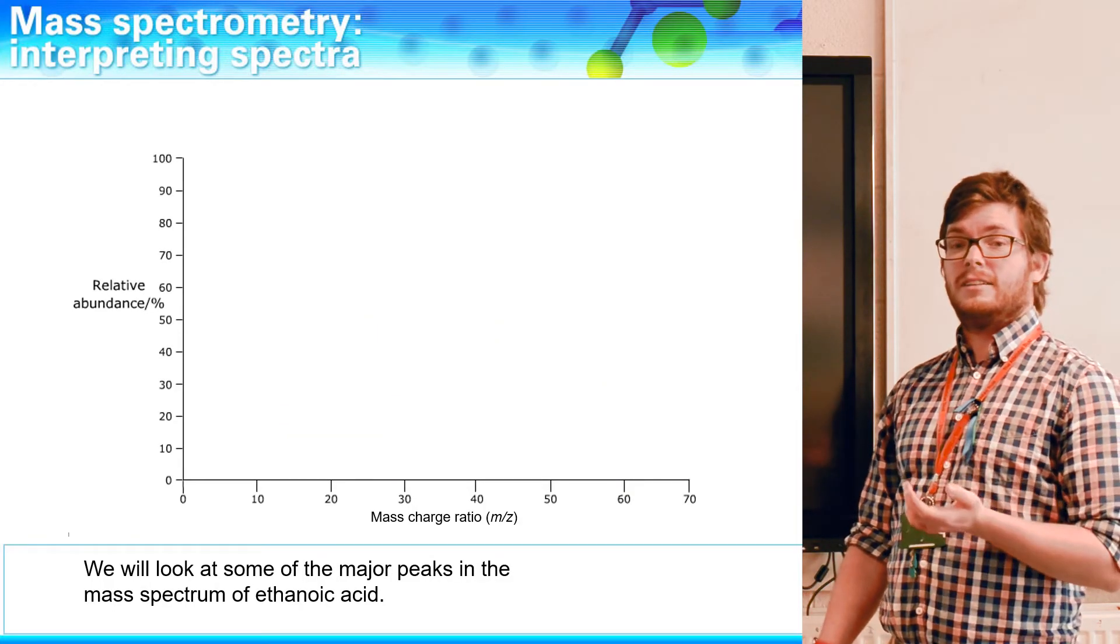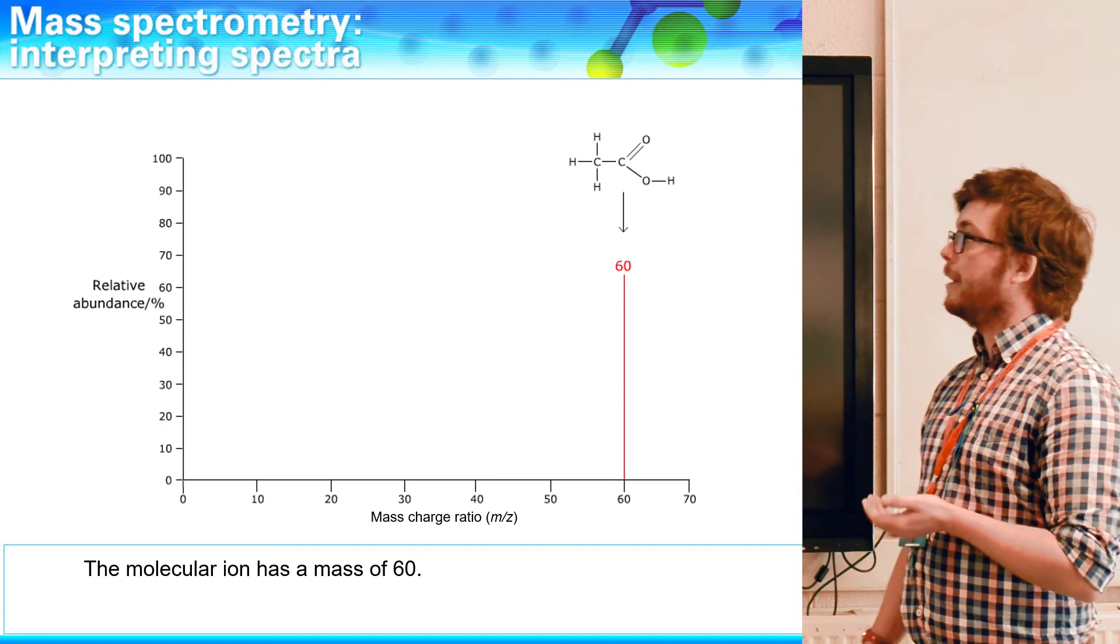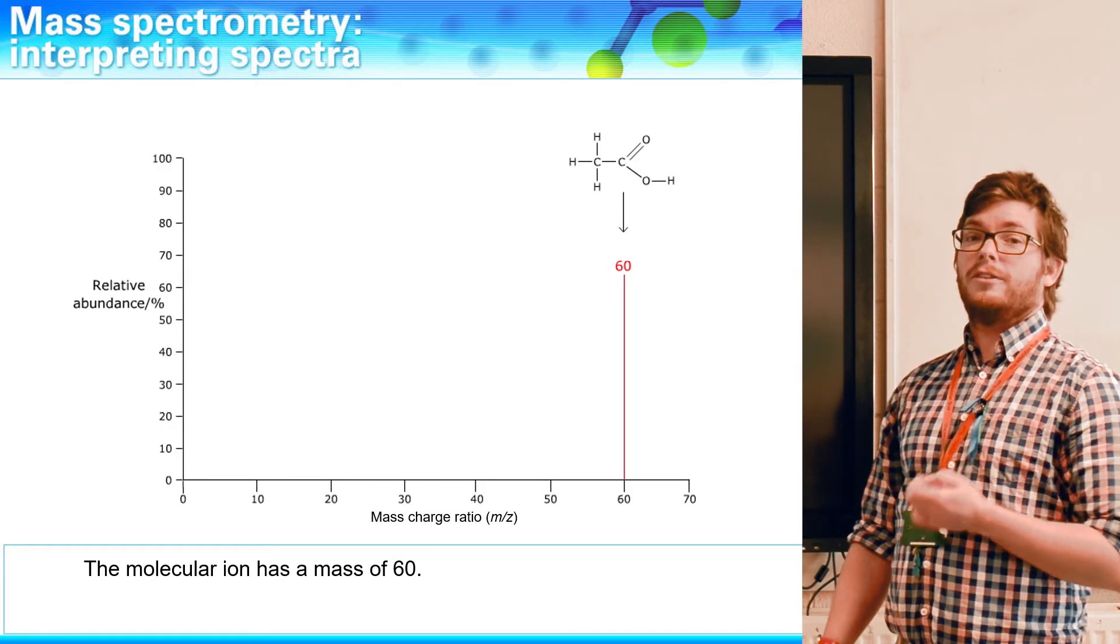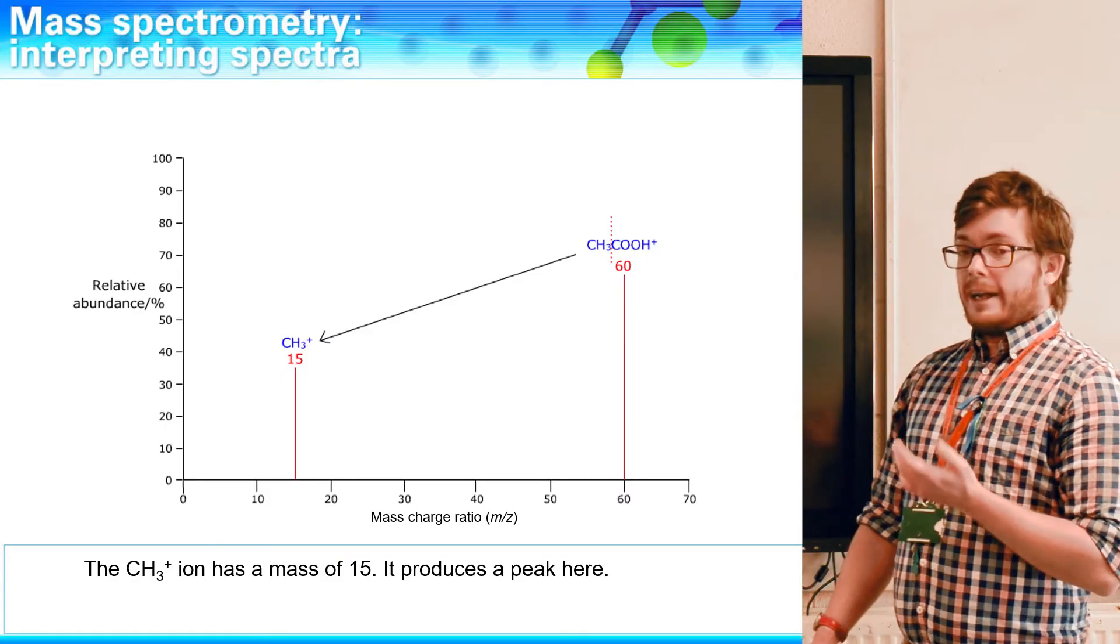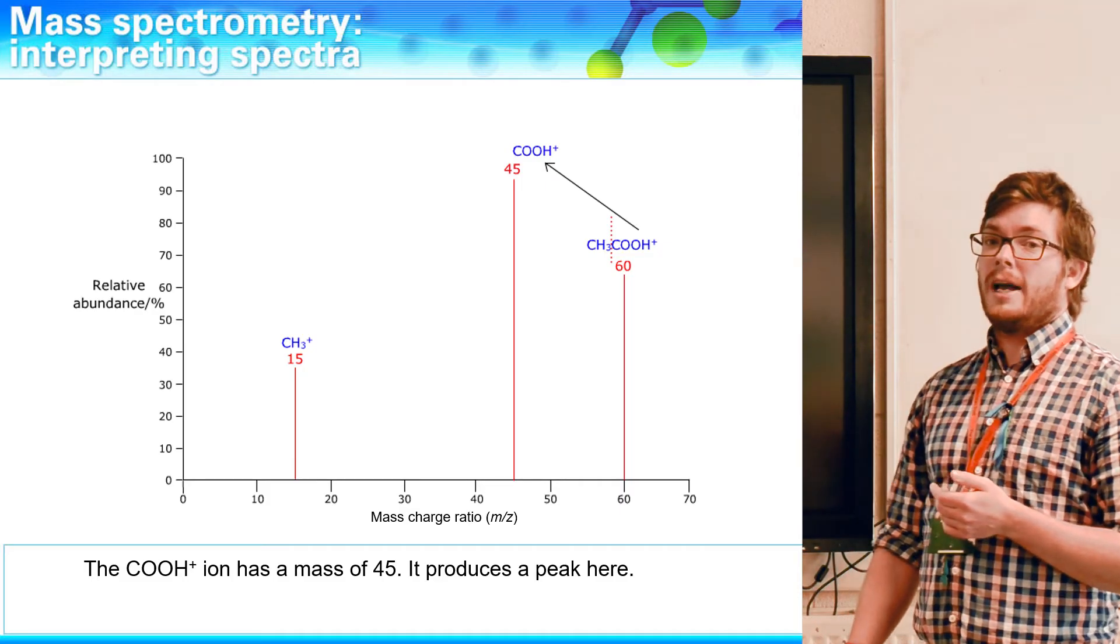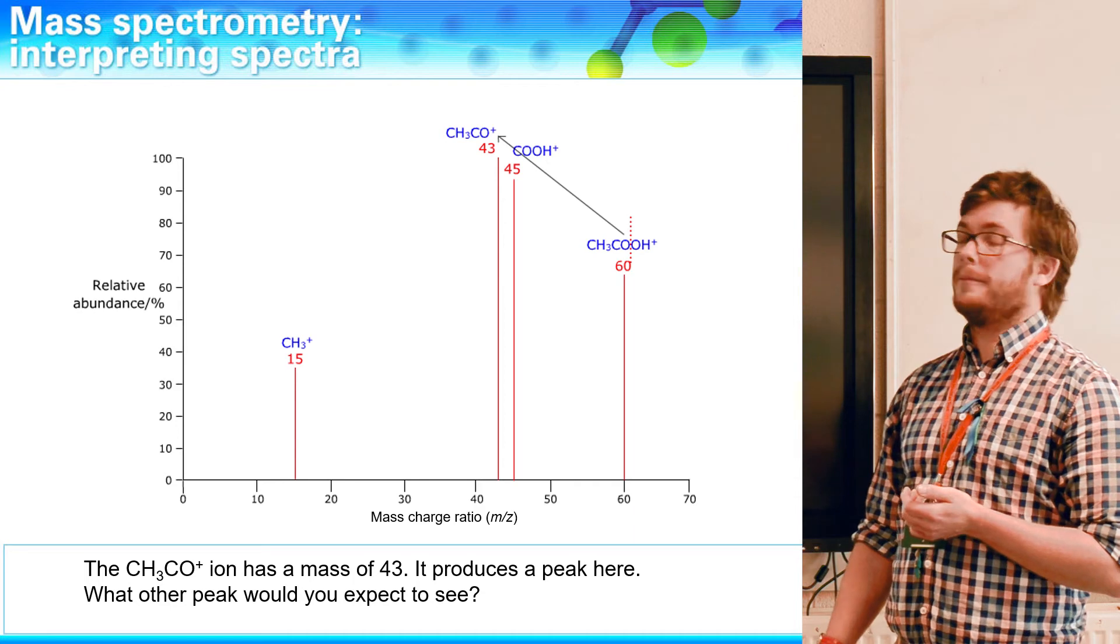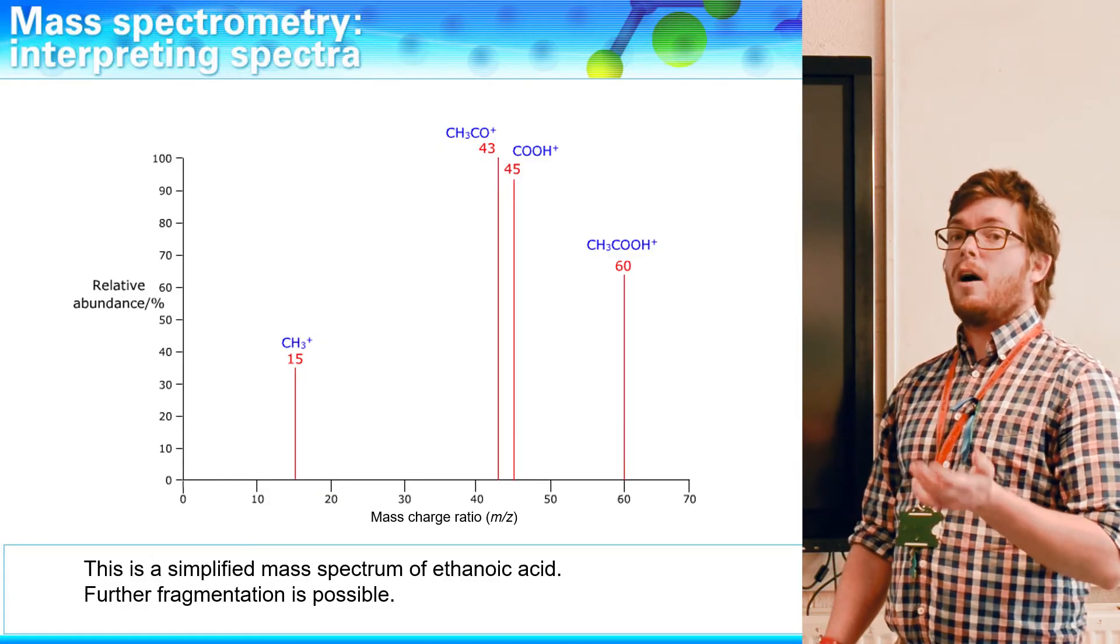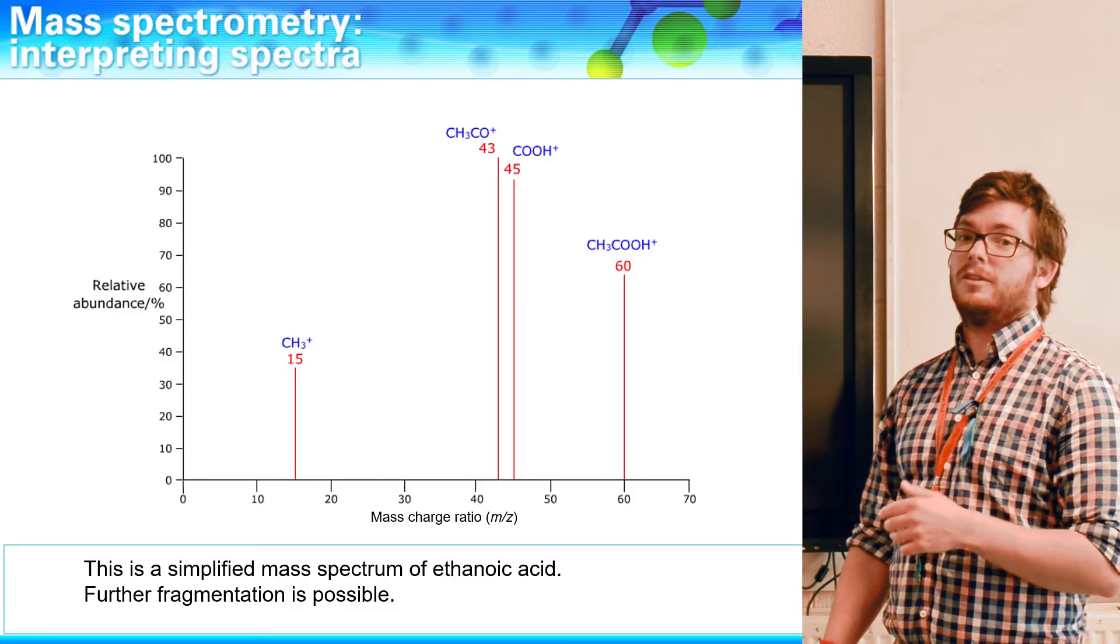So we're going to look now at ethanoic acid as an example. Again we know from calculating the relative molecular mass that it should have a peak at 60 but again we need to think about where the bonds are likely to break in this molecule. We can see that there is a likelihood of it forming a CH3 plus ion. We can tell they're becoming quite common. That again gives us the peak at 15, a peak which we'll see quite a lot in quite a lot of examples. It could also form the COOH ion at 45 and we can also see a peak at 43 which is formed from the CH3CO ion as well. So again it's really important that you are adding up all of the masses properly. It is easy to miss out hydrogens and that will affect the number and when it does affect the number that means you could easily make a mistake. So it's really important that you remember all of the atoms in each of the fragments.